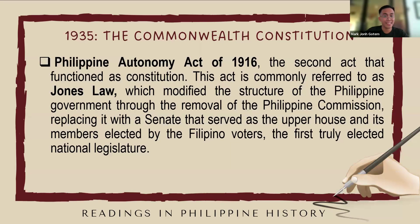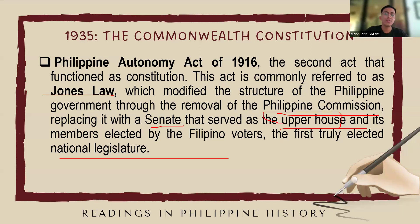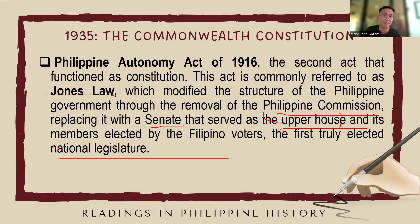The Philippine Autonomy Act of 1916, the second act that functioned as a constitution, is commonly referred to as the Jones Law. It modified the structure of the Philippine government through the removal of the Philippine Commission, replacing it with a Senate that served as the upper house, with members elected by Filipino voters — the first truly elected national legislature. The Jones Law was a significant milestone in the history of the Philippines under American rule, representing a further step towards self-governance and autonomy for the Filipino people.